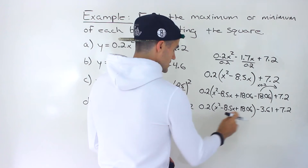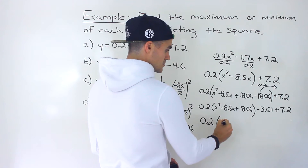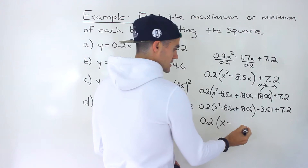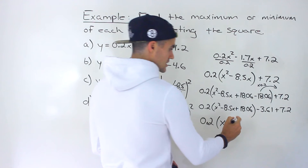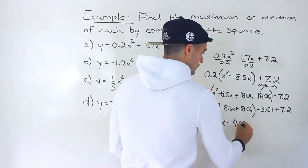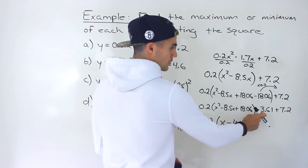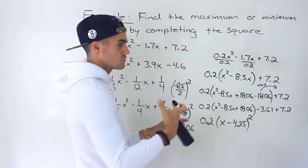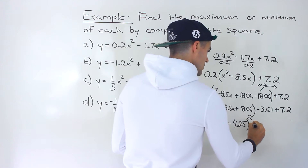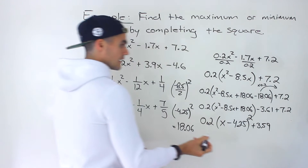Now we have a perfect square trinomial inside the bracket. Remember what happens here is always x, with the same sign — negative in this case — and half of 8.5, which is 4.25. We square that, then negative 3.61 plus 7.2 nets out to positive 3.59.